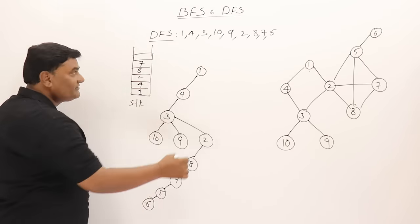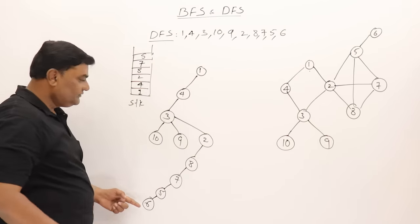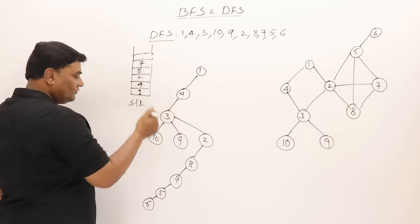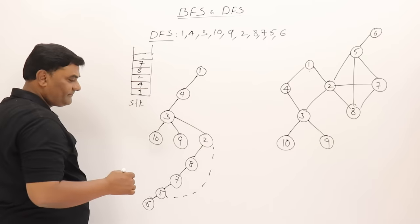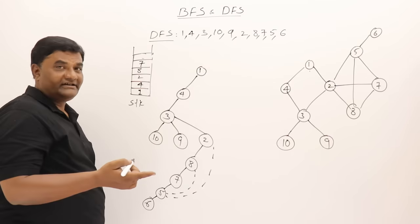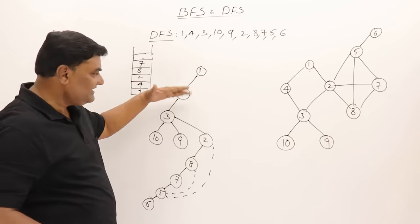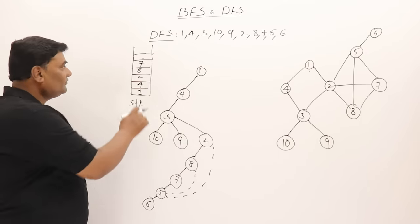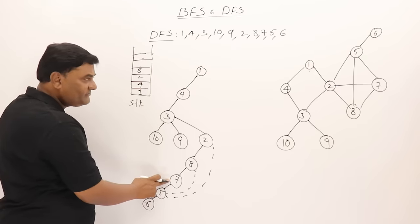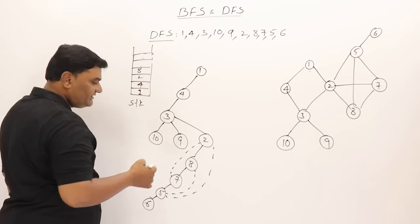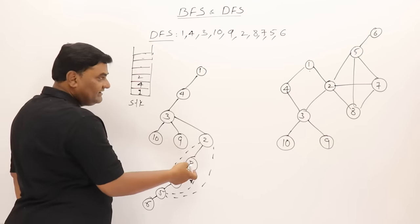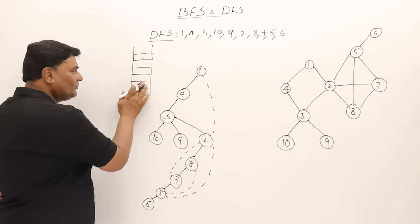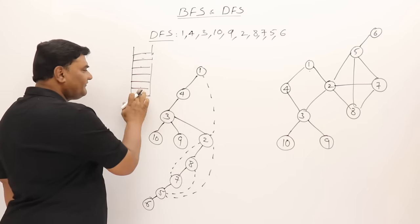From 5 adjacent is 6 — visit 6, suspend 5, explore 6 — nothing adjacent to 6, so go back to 5. From 5 can go to 2 — already completed. Can go to 8 — already completed. Nothing remaining for 5, so 5 is completely explored. Go back to 7 — from 7, 2 is already visited. Go back to 8 — nothing remaining. From 2 go to 1 — already visited. Go back to 4, then 3, nothing remaining.